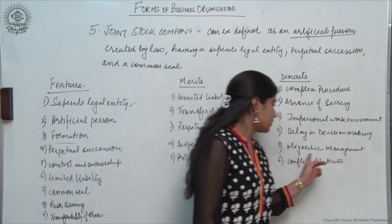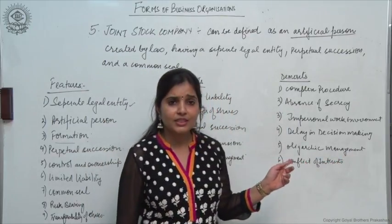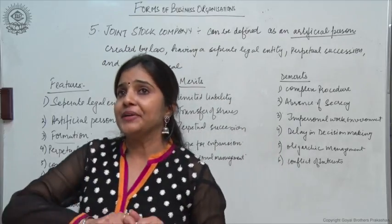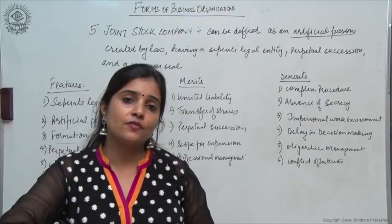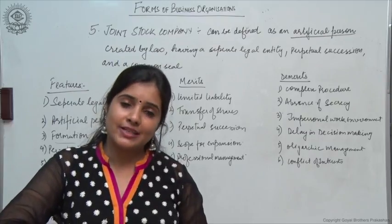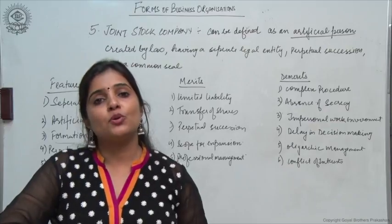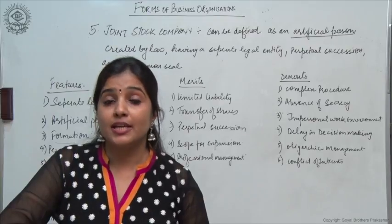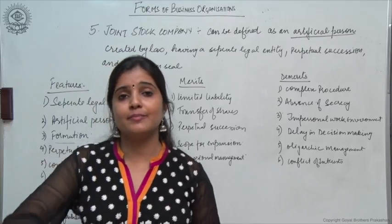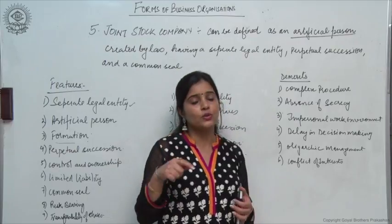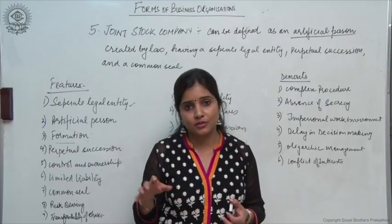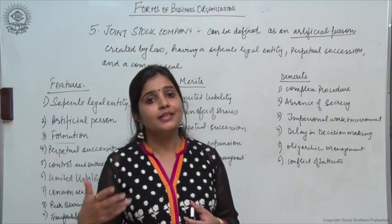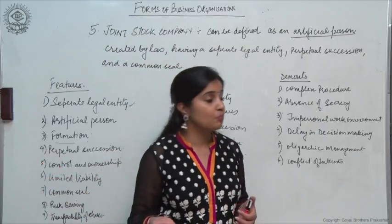Then there is oligarchic management. Although we say shareholders elect their representatives in the form of a board of directors, what actually happens is that these board of directors use all kinds of means to get themselves re-elected. So basically it is not the interest of the shareholders that is given importance, but their personal gains — they always try to get themselves re-elected as board of directors.